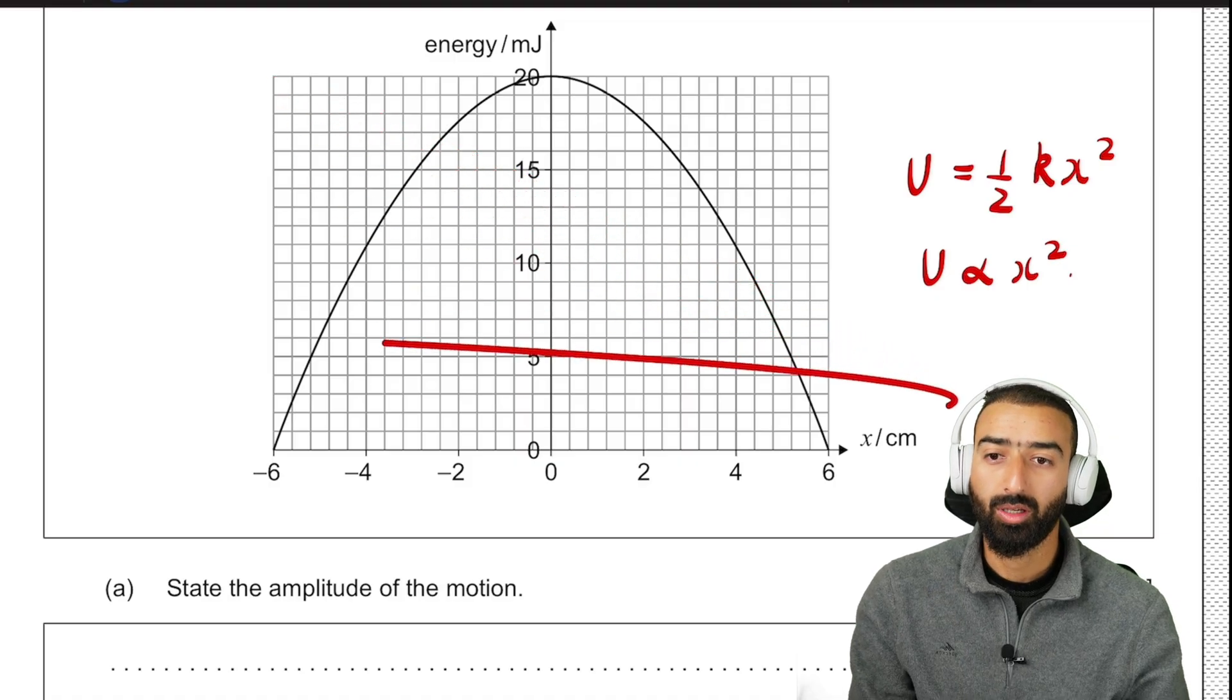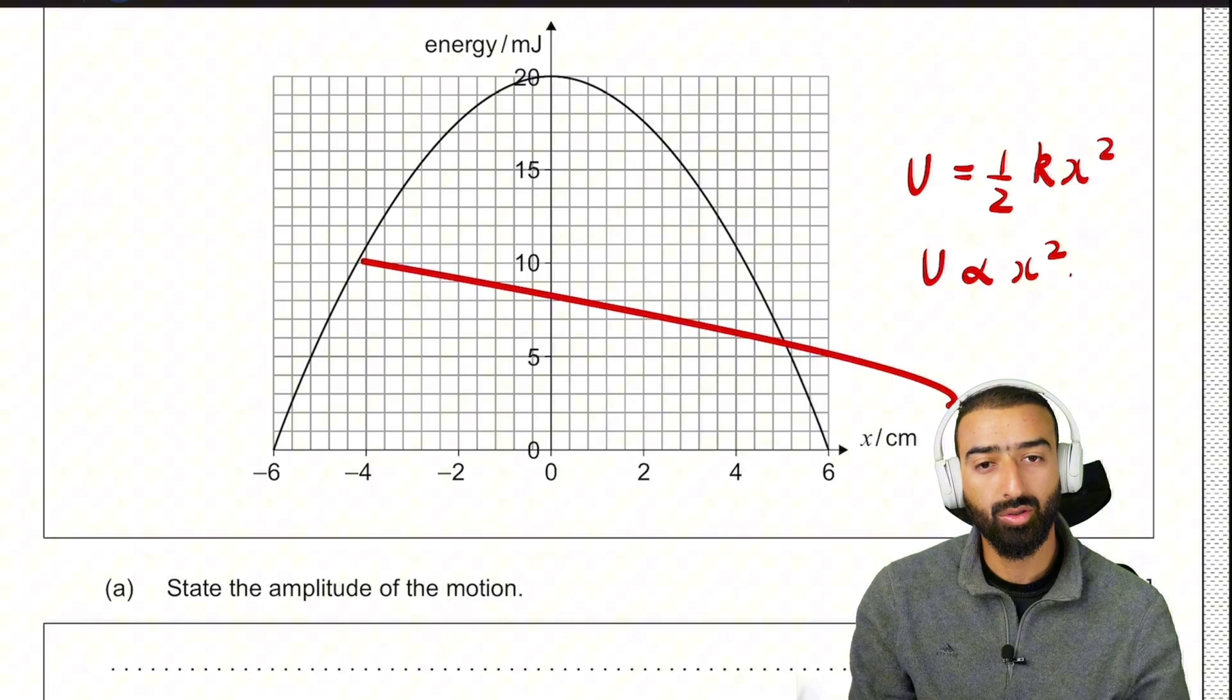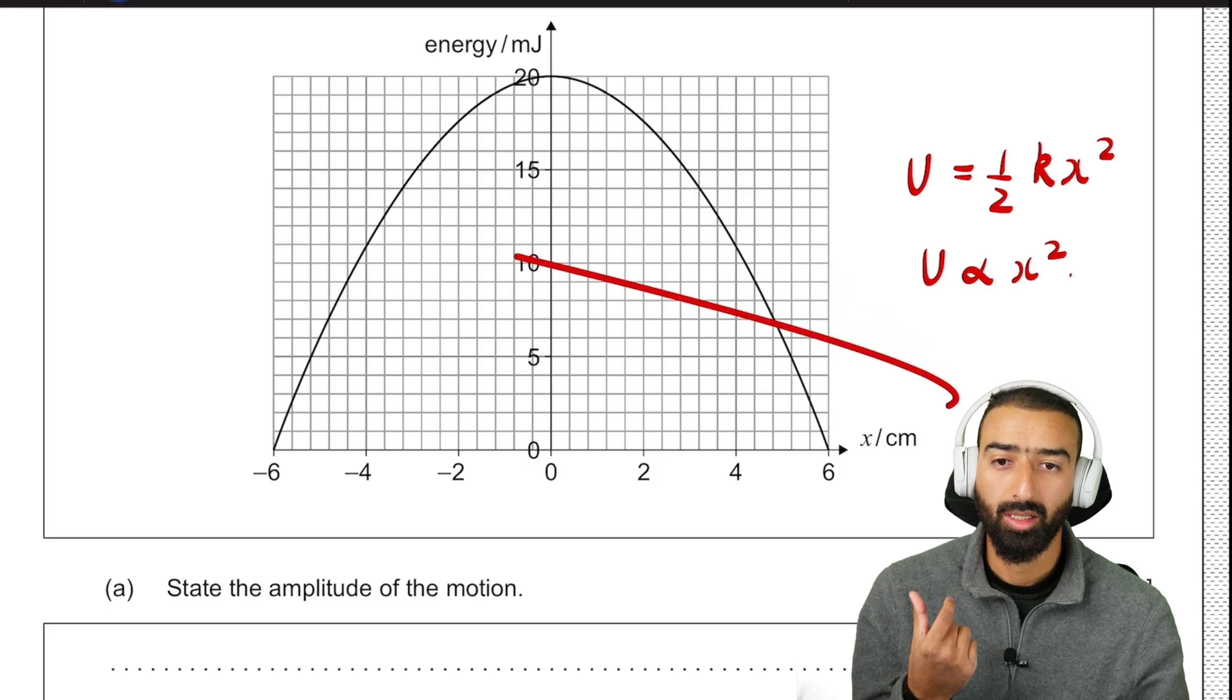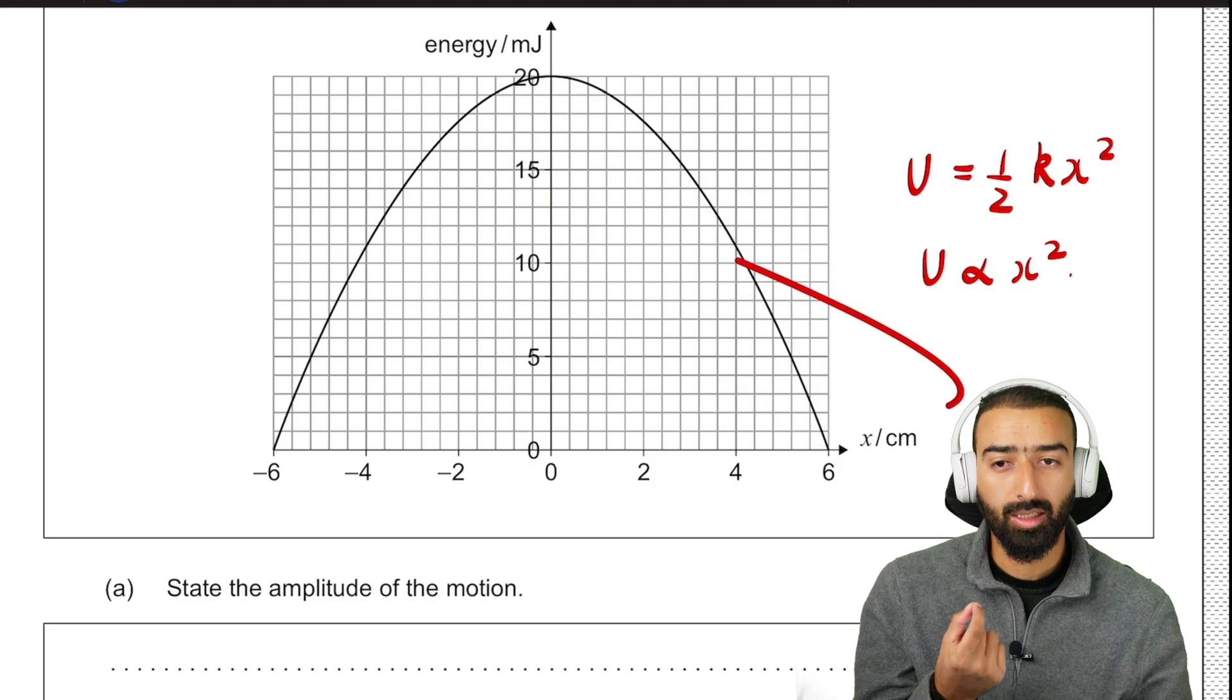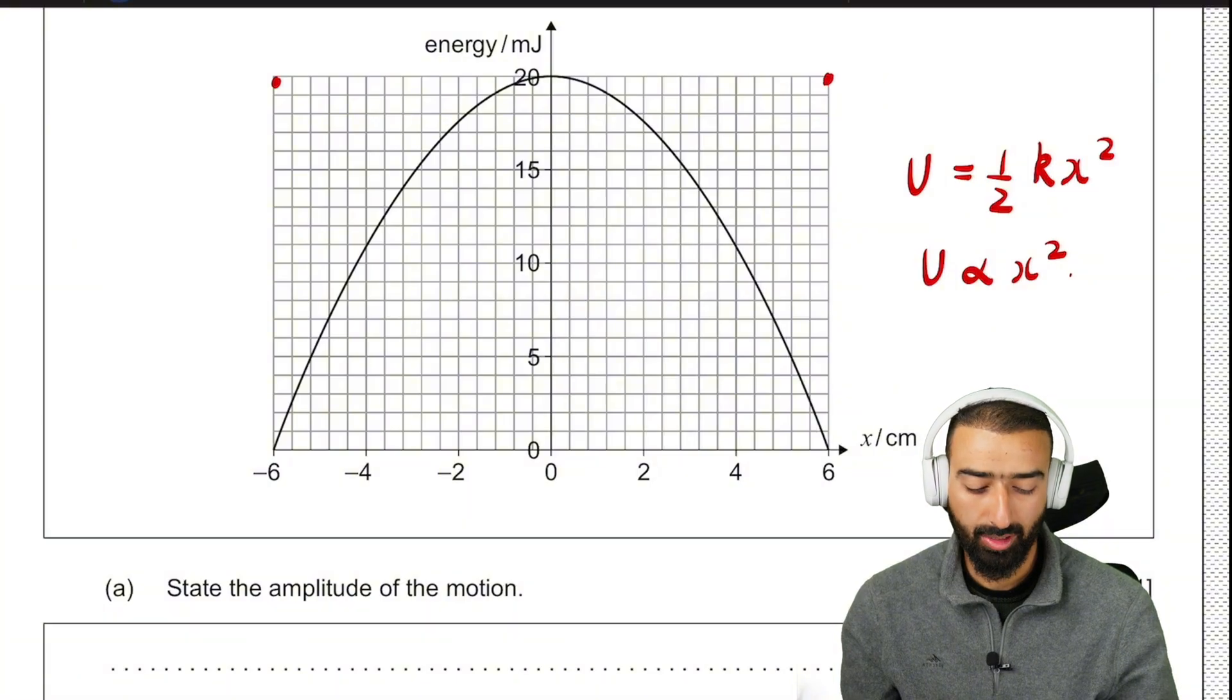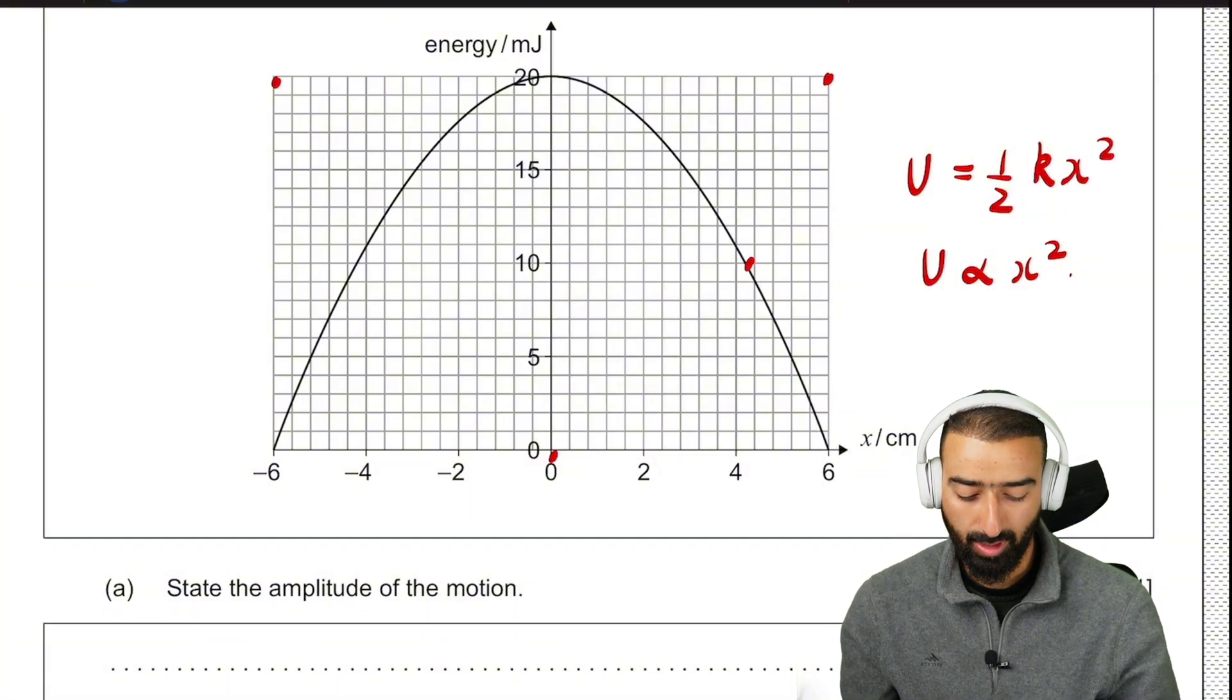Furthermore, when x equals minus 4, the kinetic energy is 10 joules. That means the potential must be 10 joules as well, because the total is 20. In a similar fashion, when x equals 4, the kinetic is 10 joules. The rest of the 10 joules must appear as potential energy. So we have a point here, a point here, a point here, and two points right over here.